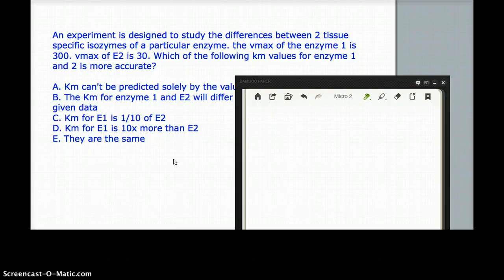So this is part 2 of our enzyme kinetics video and this video deals with this question. And the question says, an experiment is designed to study the differences between two tissue-specific isoenzymes of a particular enzyme. So there's two forms of the same enzyme.